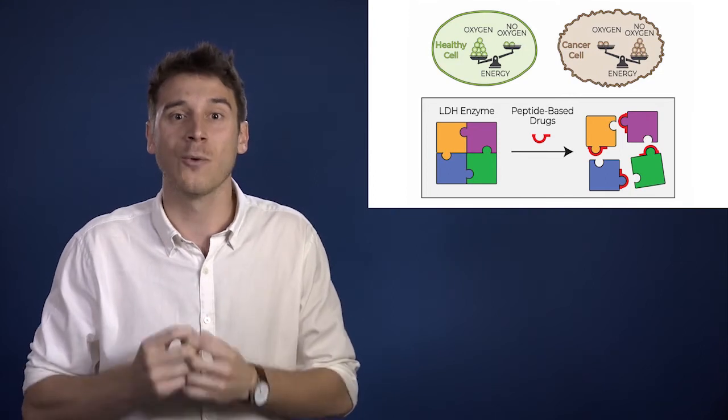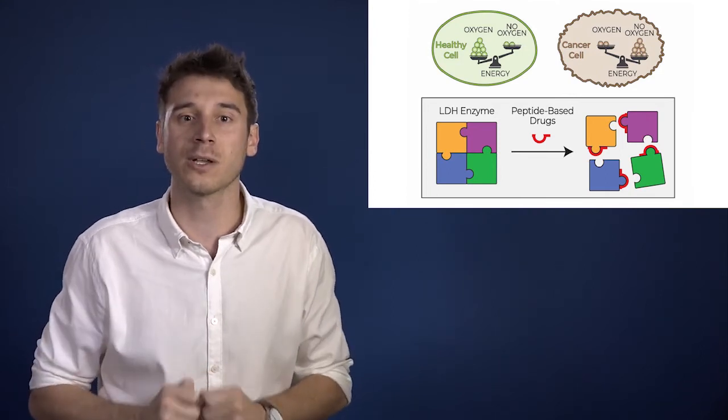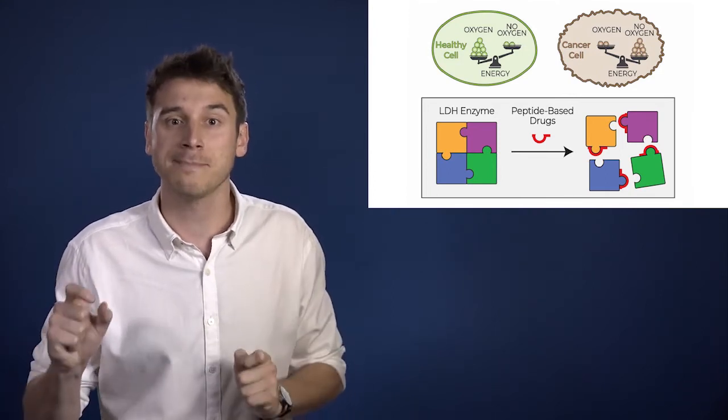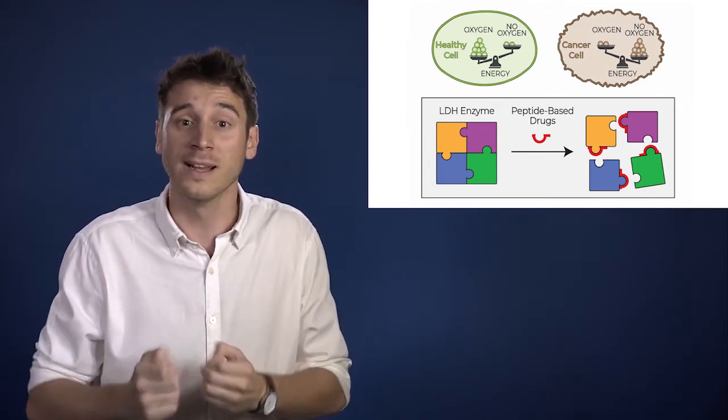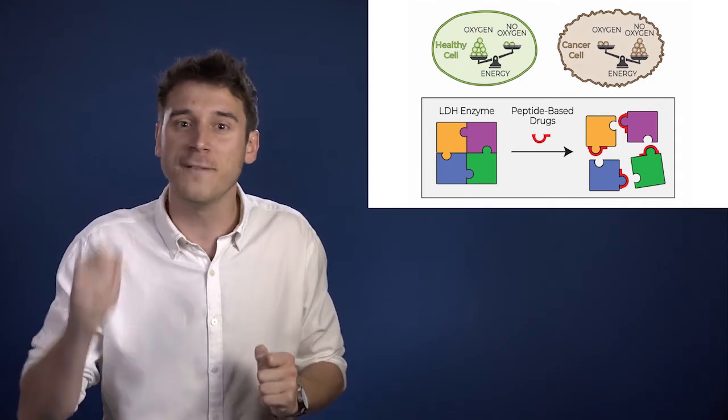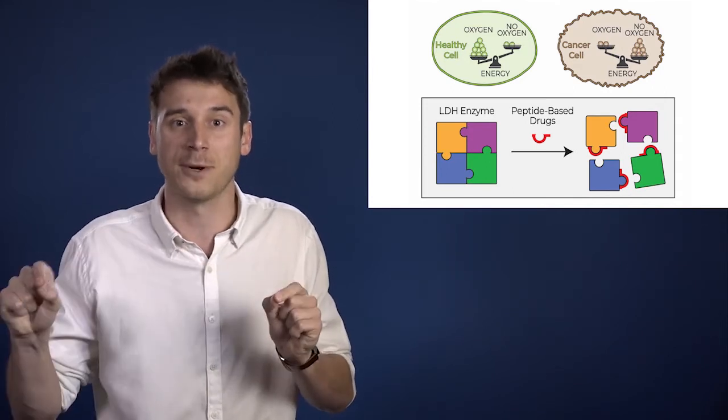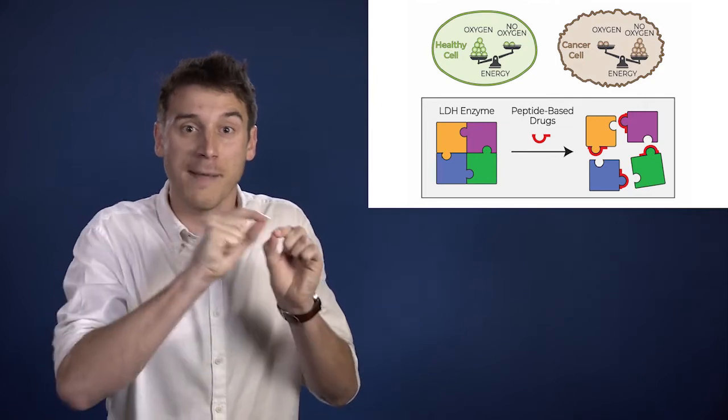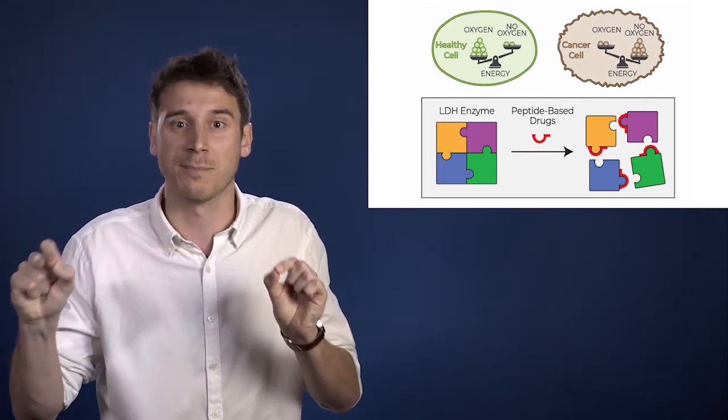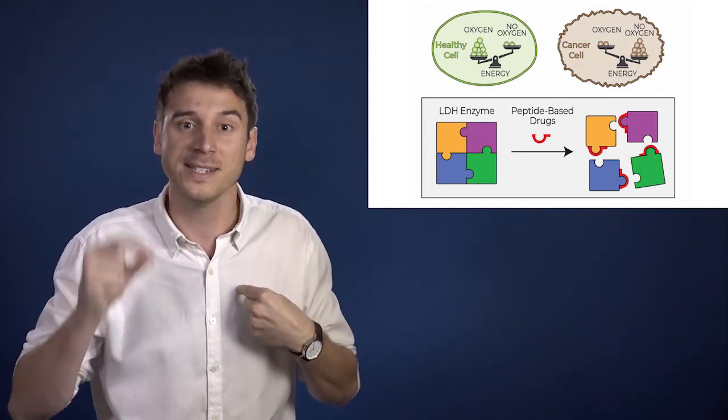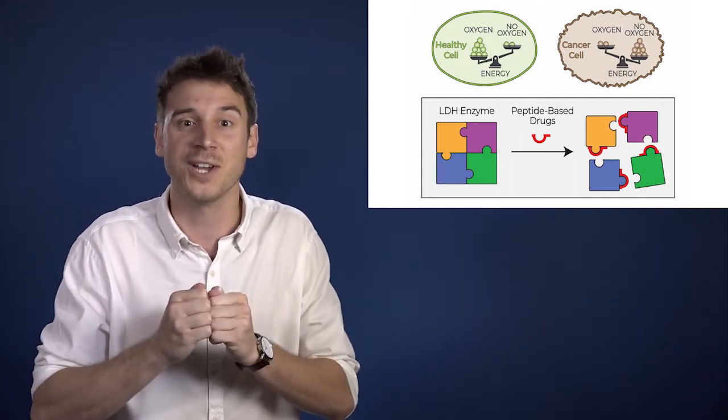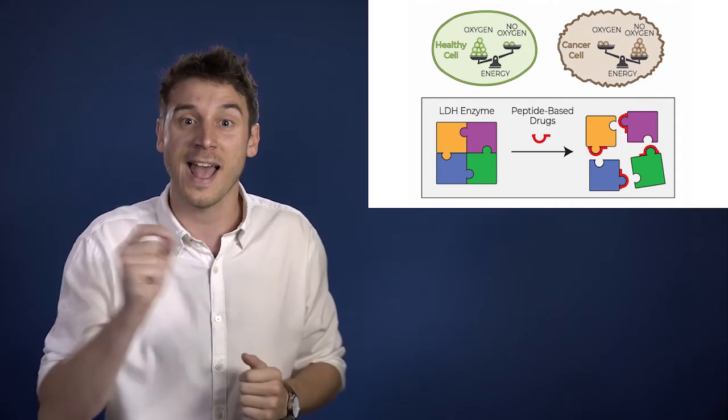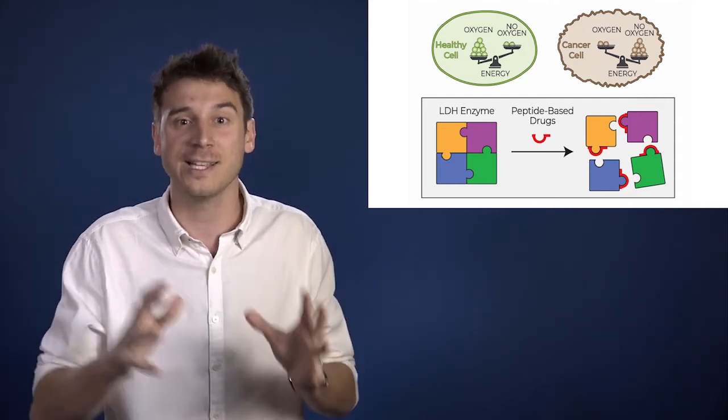To achieve that, we use a fascinating class of molecules called peptides. Peptides are like mini proteins, and they behave like proteins, too. So we design peptides that are very strong at binding to these proteins. But more specifically, at binding to the edges of these proteins. Because when our peptides bind to the right spot, the jigsaw puzzle doesn't match anymore. It doesn't click. And that means LDH becomes inactive.